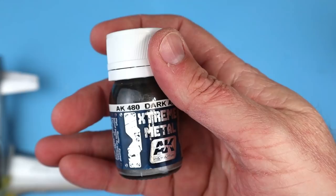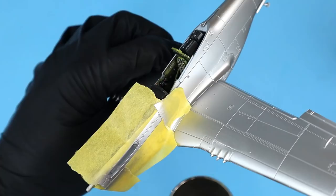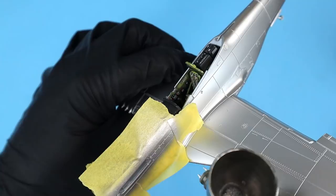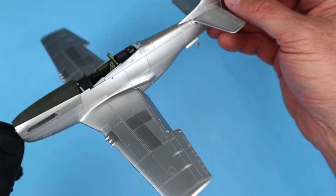To add a little more variation to the natural metal finish I masked off a few individual panels and sprayed those with AK's dark aluminum. Those included areas around the engine exhaust, machine guns, and gun and ammunition access panels.